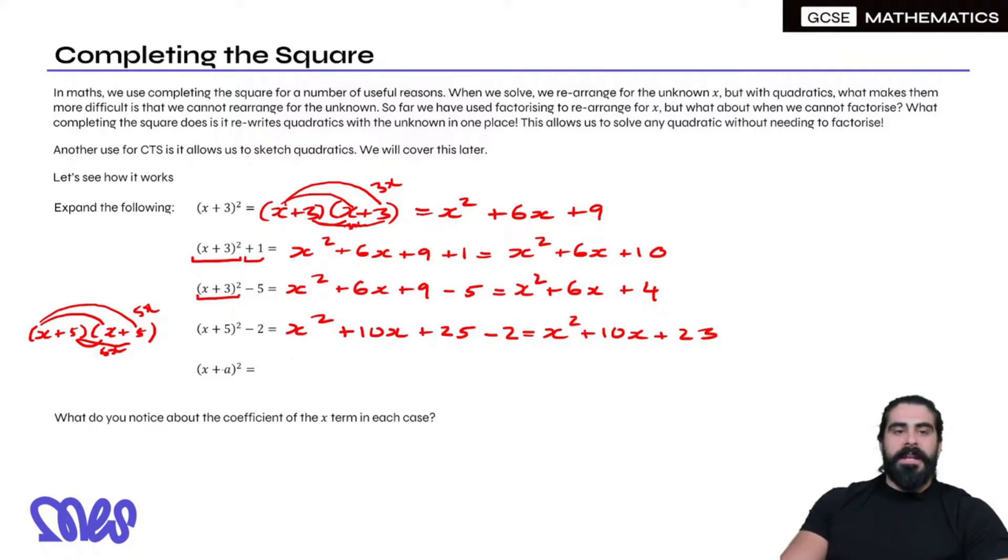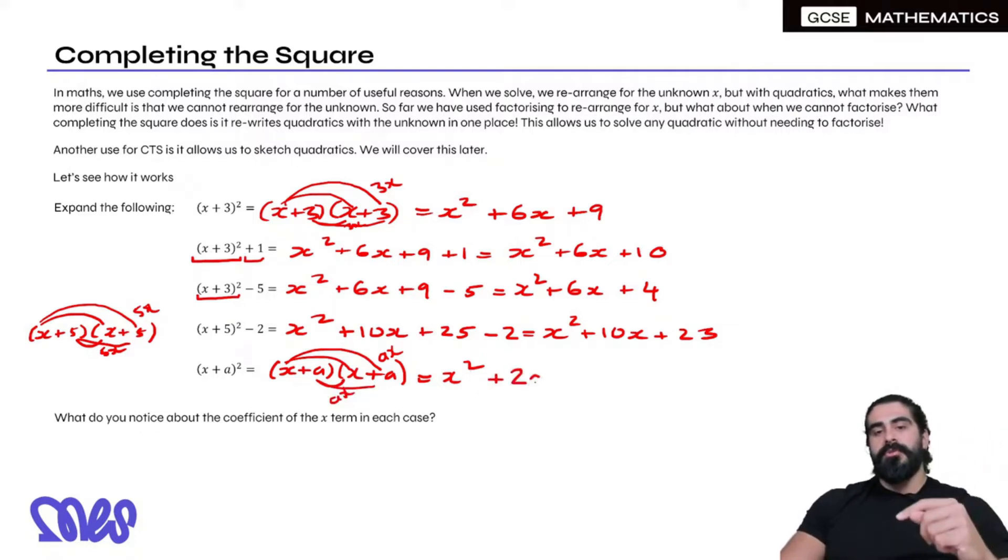Then the final one: (x + a)². So (x + a)(x + a). x times x is x², x times a is ax, but because a represents the number here I'm going to write ax, then another ax, then a². So ax plus ax is 2ax plus a².